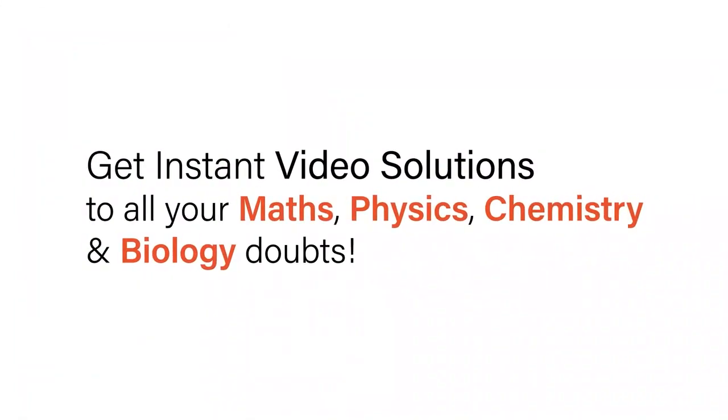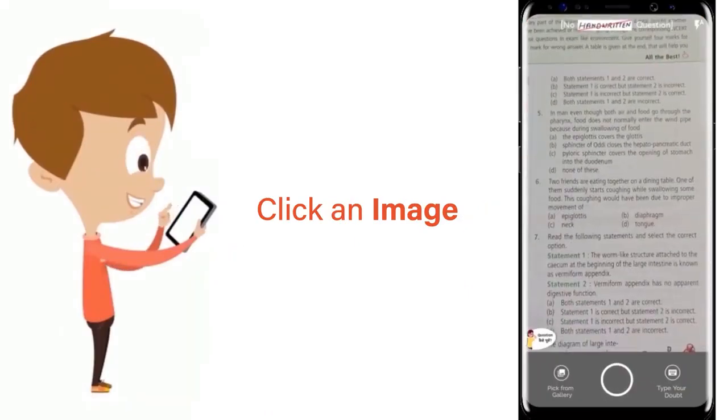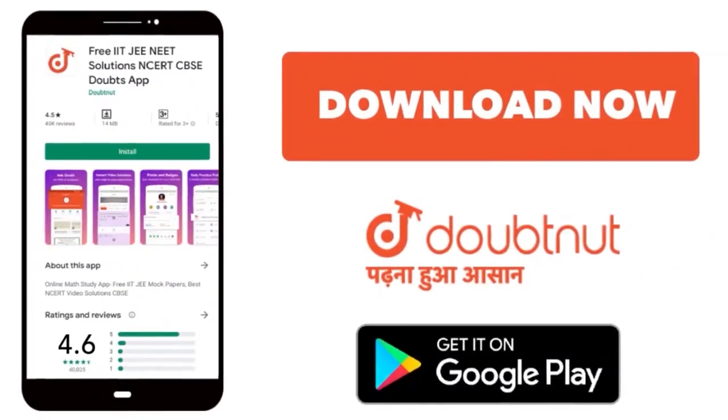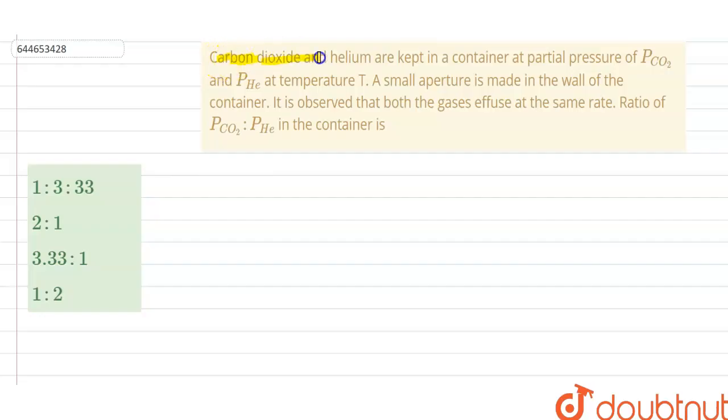With Doubtnet, get instant video solutions to all your maths, physics, chemistry, and biology doubts. Just click the image of the question, crop it, and get instant video solution. Download Doubtnet app today. Hello, so our question is carbon dioxide and helium are kept in a container.